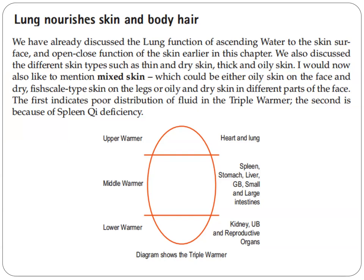We have here a diagram showing the triple warmer. The organs belonging to the upper warmer are the heart and lung. In the middle warmer: the spleen, stomach, liver, gallbladder, small intestine, and large intestine. In the lower warmer: the kidney, urinary bladder, and reproductive organs.